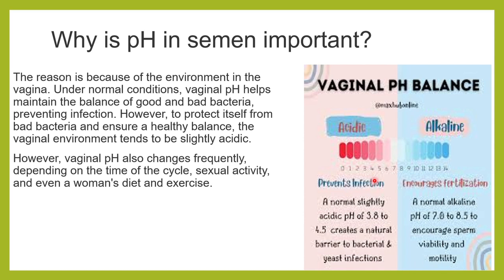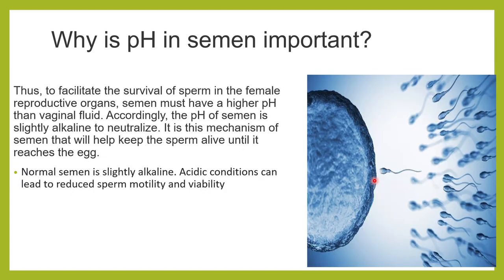Vaginal pH also changes depending upon sexual activity, women's diet, exercise, etc. Semen pH becomes important because when sperms have to traverse the vagina and meet the egg, they must survive the acidic pH of the vagina. The semen's alkaline nature helps the sperm live until they reach the egg.